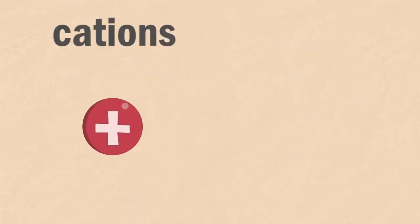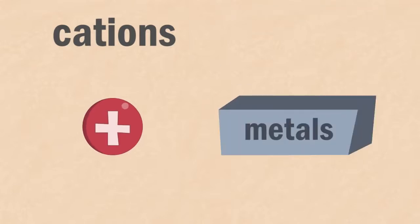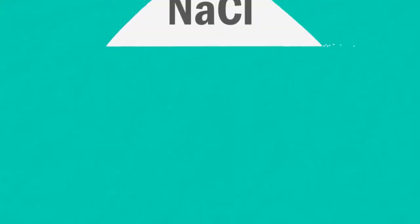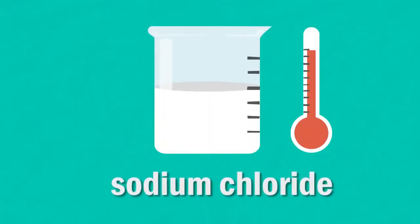In our examples here, the cations or positive ions are all metals, but it's worth noting that hydrogen can also be a cation in an ionic compound. We're going to look at molten sodium chloride.